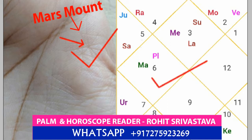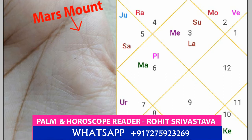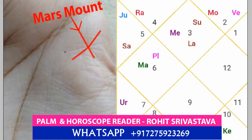Friends, please watch this video till the end. As you can see in this palm, there are star signs on the Mars mount. Whenever three to four lines intersect each other, this kind of star sign appears on the palm. There are some advantages and disadvantages of this star sign.